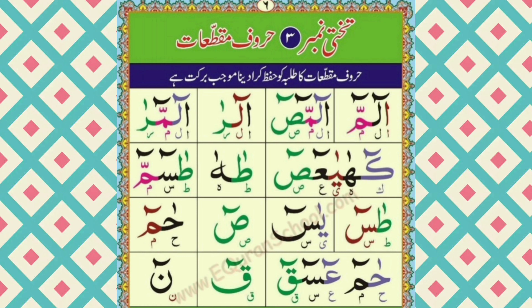حروف مقتعات کیا ہوتے ہیں؟ حروف مقتعات وہ حروف یا لیٹرز ہیں جو کئی سورہ کے شروع میں آتے ہیں۔ آج ہم تجوید کے ساتھ اس کو پڑھیں گے۔ تو چلیں شروع کرتے ہیں، سب سے پہلا کیا لفظ ہے؟ اس میں کیا کیا دیا گیا — الف ہے، لام ہے، اور میم ہے۔